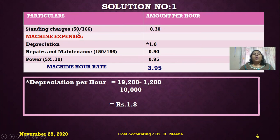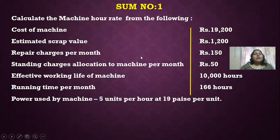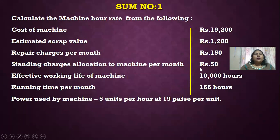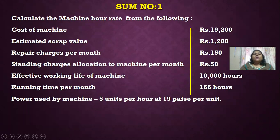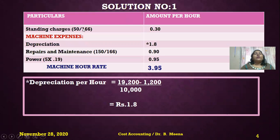Now I'll calculate the machine rate using this format with two columns: particulars and amount per hour. In this problem, the standing charges are given as a total per month — 50 rupees per month. The running time of the machine per month is 166 hours. So standing charges of 50 rupees for a month can be converted to per hour by dividing by 166 hours.